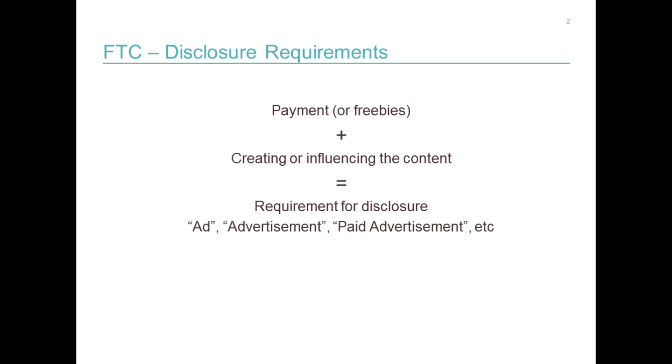When it comes to disclosures, what the FTC are trying to guard against — much in the same way as the ASA and the CMA here in the UK — is that consumers can understand when products and services are actually paid for by the advertiser. What the FTC is looking for is a very similar test applied here in the UK: namely that where there's a payment, or in fact a freebie, or a combination of both, coupled with control from the advertiser — i.e. the advertiser is dictating what needs to be said or working to a tight brief — then there needs to be a disclosure. This is to alert the consumer to the fact that there's a commercial association between the advertiser and the online influencer.